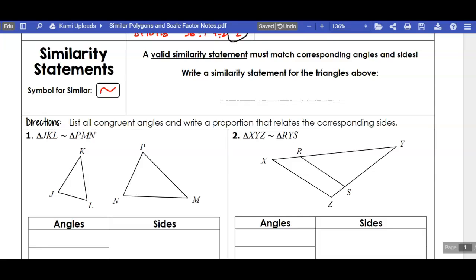A valid similarity statement must match corresponding angles and sides. This is the same thing that we would do with congruent polygons as well. Must match corresponding angles and sides. That's what we talked about in the previous video about how order matters.